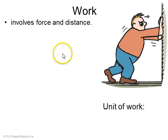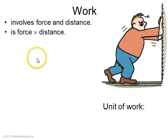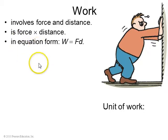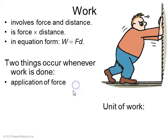So we start with work. Work in physics involves a force and a distance. And in particular, it's equal to force times distance. And our equation is W for work equals F times D. F is the force, D is the distance.